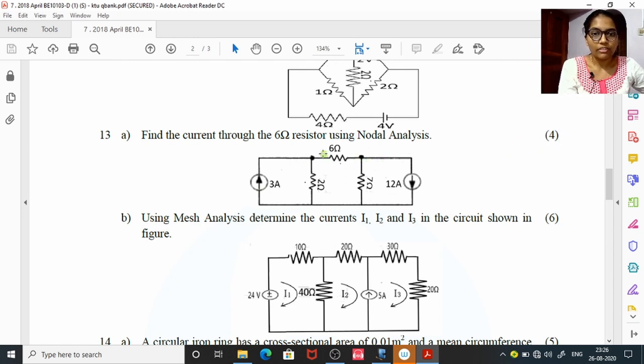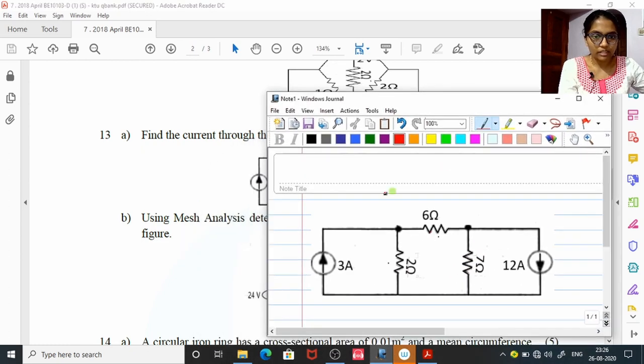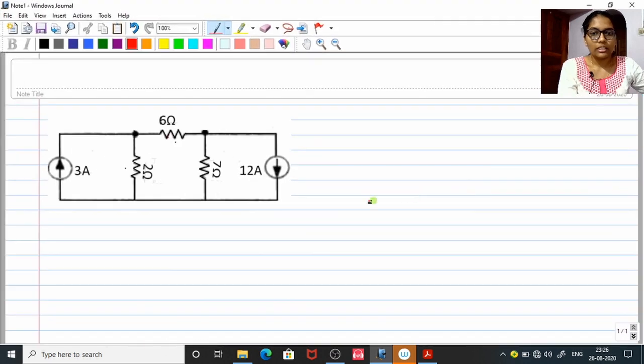This is the circuitry, you have to find the current through the 6 ohm resistor. Let us copy it down. I have already copied. So, let us start doing.